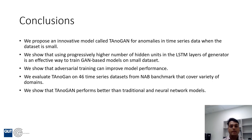In this research, we proposed an innovative model called TANUGAN for detecting anomalies in time series data when the dataset is small. We show that using progressively higher numbers of hidden units in the LSTM layers of the generator is an effective way to train a GAN-based model on small datasets, and that adversarial training can improve model performance. We evaluated TANUGAN on 46 time series datasets from NAB benchmarks covering a variety of domains, and showed that TANUGAN performs better than traditional and neural network models. Thank you.